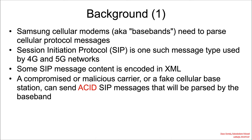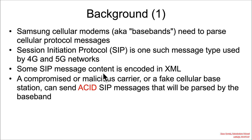The background here is that Samsung cellular modems, aka basebands, need to parse cellular protocol messages — that's how they handle cell calls. Session Initiation Protocol, or SIP, is one such message type and it's used by 4G and 5G networks. Some SIP messages have content that's encoded in XML.